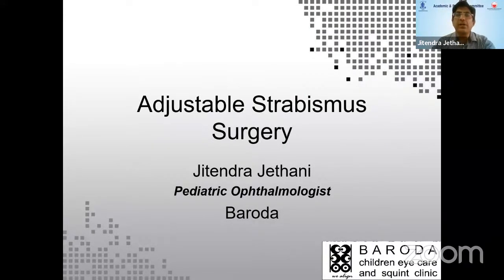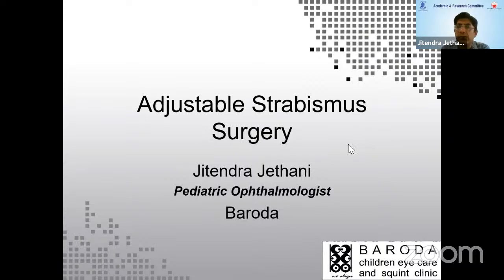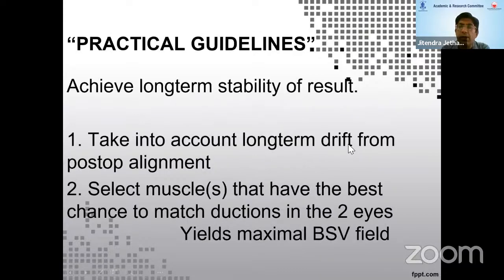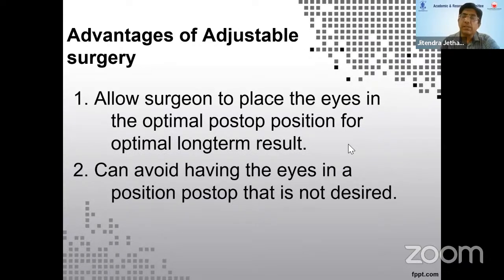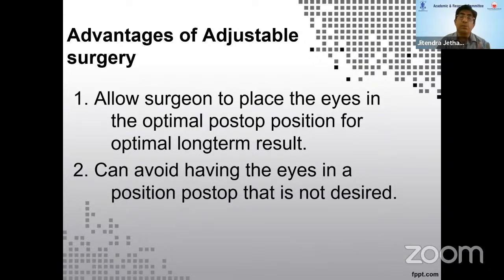Thank you for the opportunity. The basic principle of strabismus surgery is to achieve long-term stability of result — we take into account the long-term drift from post-operative alignment and select muscles accordingly. Adjustable surgery allows the surgeon to place the eyes in an optimal position post-operatively, which is suitable for the best long-term result. It gives you control over the immediate post-operative outcome, even if long-term drift still occurs.